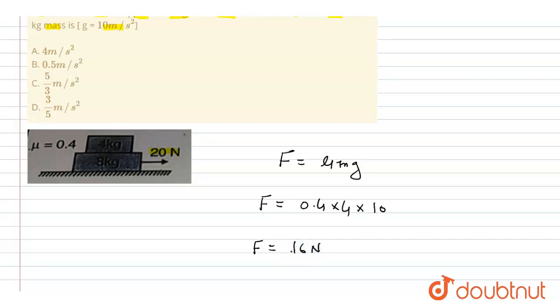We can say the force for the 4 kg block—let's say this block is A and this block is B—the force for block A is 16 newton.